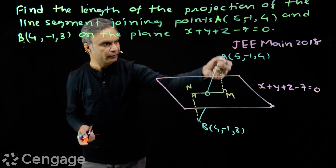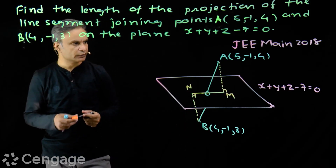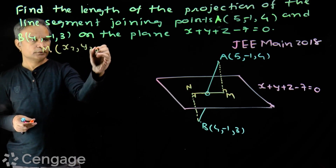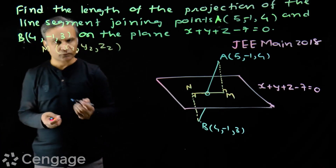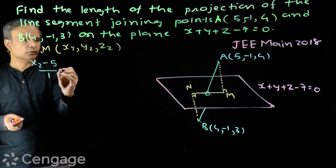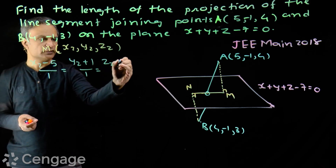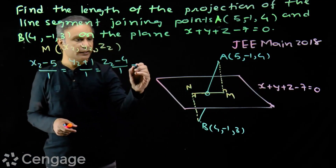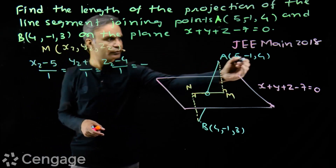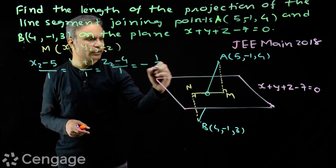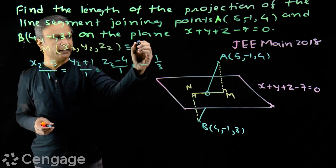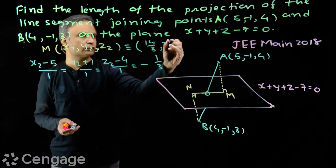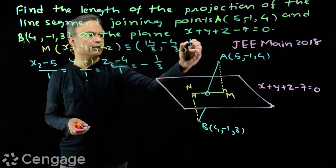M and N are the feet of perpendiculars from points A and B on the plane. We can find the foot of perpendicular of a given point on the plane using the formula. Suppose coordinates of point M are (x2, y2, z2). The formula gives: (x2 - 5)/1 = (y2 + 1)/1 = (z2 - 4)/1 = -(5 - 1 + 4 - 7)/3 = -1/3. So coordinates of point M are x2 = 14/3, y2 = -4/3, z2 = 11/3.